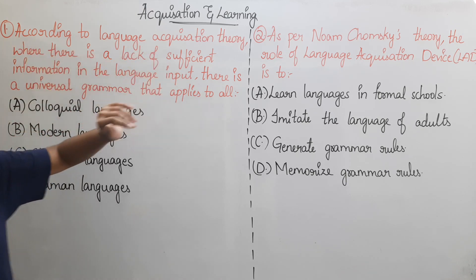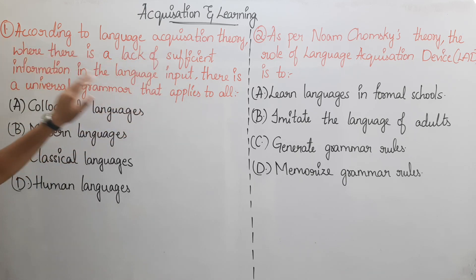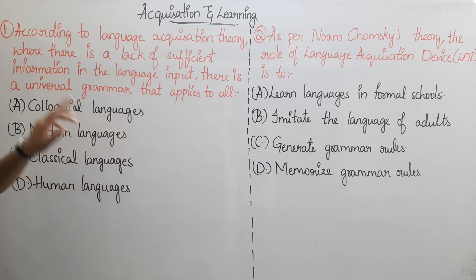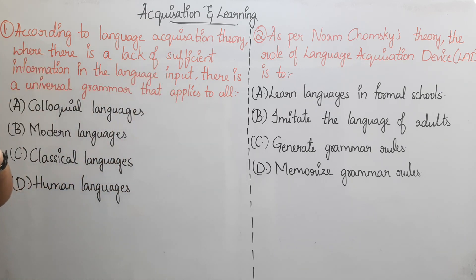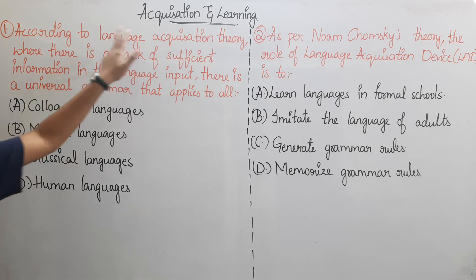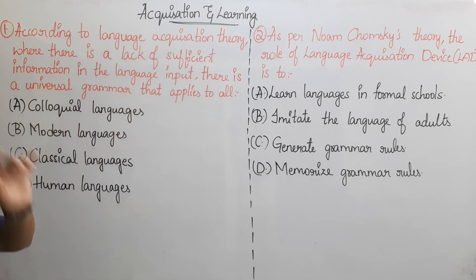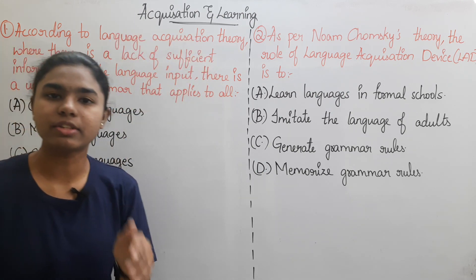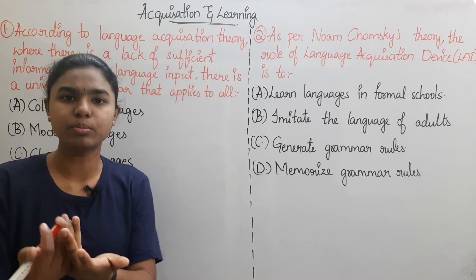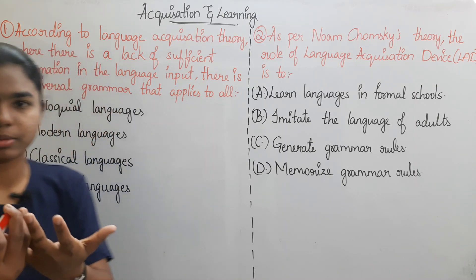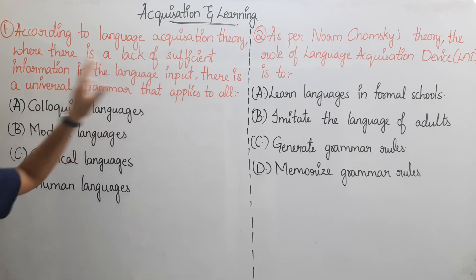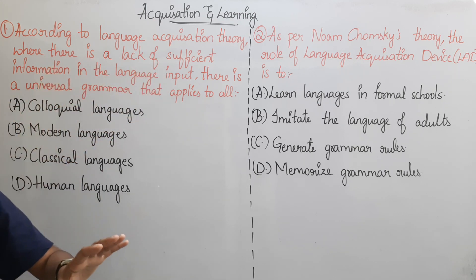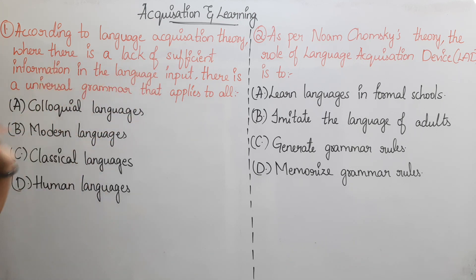According to language acquisition theory, where there is a lack of sufficient information in the language input, there is a universal grammar that applies to all. In our language acquisition theory, language input means you will receive information. If you have the information in the language input, we will use the universal grammar in all cases.